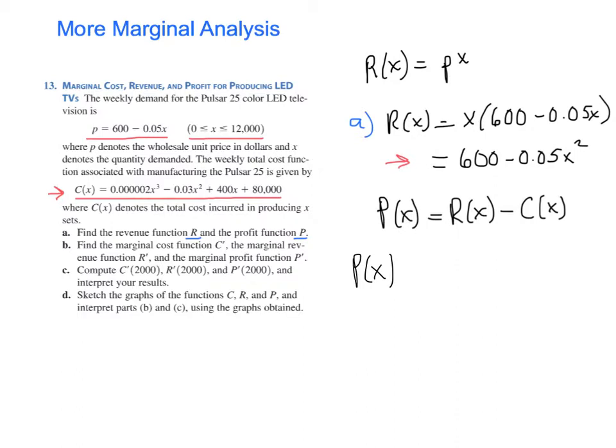P of X. So we're just going to subtract R of X minus C of X. Now, that minus sign in front of C of X is going to distribute to every term in this function. So all of these signs are going to change when we combine like terms and make P of X. And when you do that, you end up with the following equation here. Negative 0.0000002X cubed minus 0.02X squared plus 200X minus 80,000.